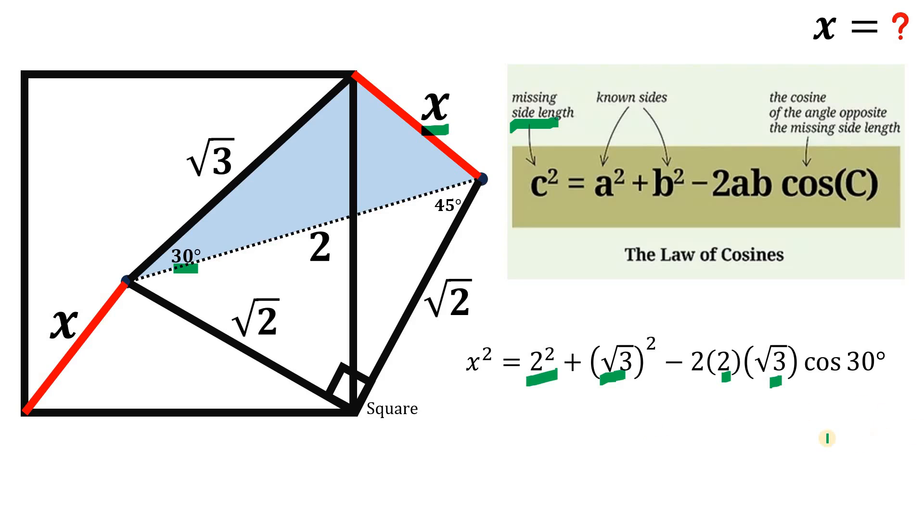Now if we simplify the right hand side of our equation we get that x squared equals 4 plus 3 minus 4 times square root of 3 times cosine of 30 which is square root of 3 over 2. We have here 4 plus 3 is 7, then multiply 4 times square root of 3 times square root of 3 over 2, we get 2 times 3.